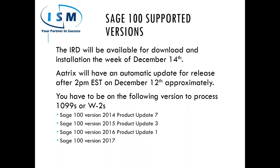The IRD will be available for download and installation the week of December 14th for your Sage 100 system. AATRIX will release their 2016 forms update after approximately 2pm on December 12th. To produce 1099s and W-2s, you must be on one of these four versions: 2014 Product Update 7, 2015 Product Update 3, 2016 Product Update 1, or the new Sage 100 version 2017. If you are not on one of these, contact am.goism.com to get upgraded.